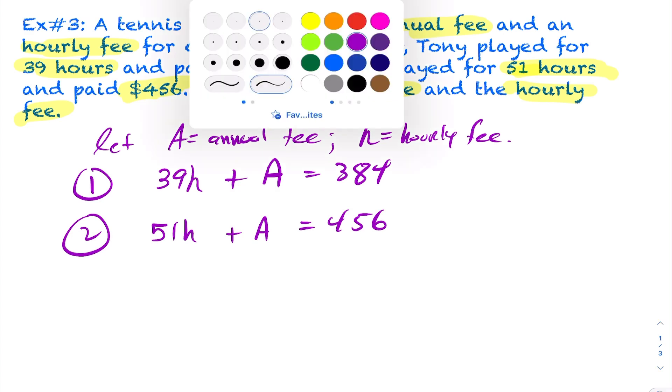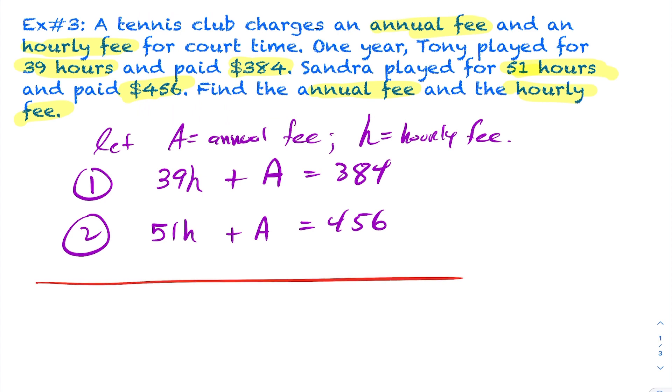We can solve this however we want. Let's try to do this using elimination. The reason I'm choosing elimination is these two coefficients are the same. So I can just subtract these two equations. If I subtract column-wise, we'll have 39 minus 51. So 39h minus 51h is negative 12h. The a's cancel. And if you take 384 and subtract that from 456, you get negative 72. Divide across by negative 12, and you'll find out that the hourly fee here was $6.